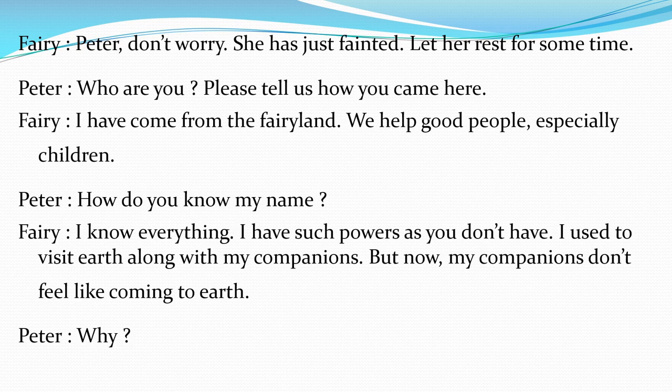Fairy: Peter, don't worry. She has just fainted. Let her rest for some time. Peter: Who are you? Please tell us how you came here. Fairy: I have come from the fairyland. We help good people, especially children. Peter: How do you know my name? Fairy: I know everything. I used to visit earth along with my companions. But now, my companions don't feel like coming to earth. Peter: Why?